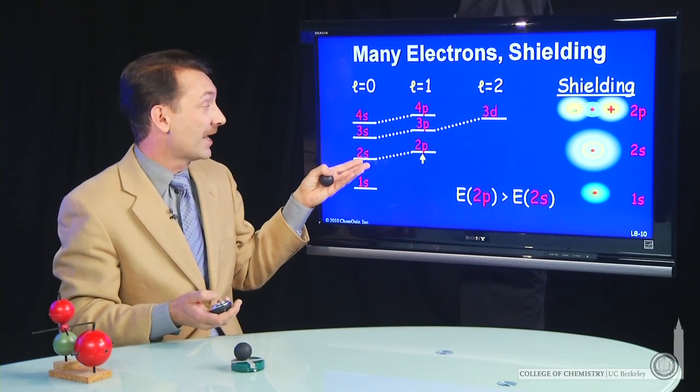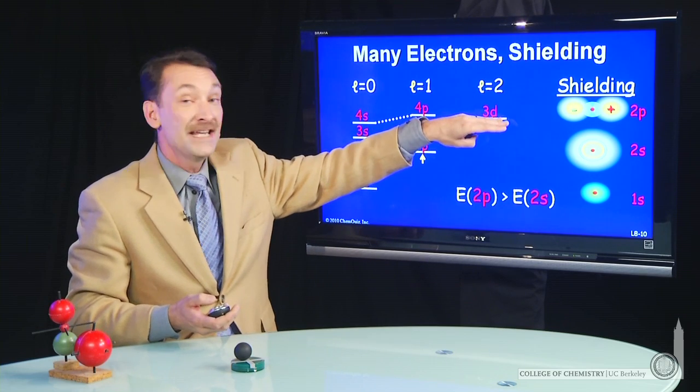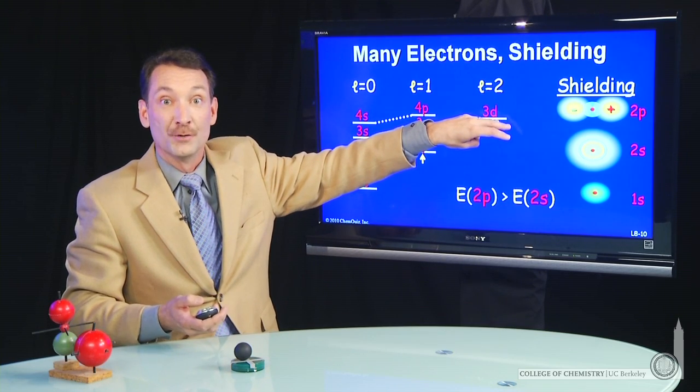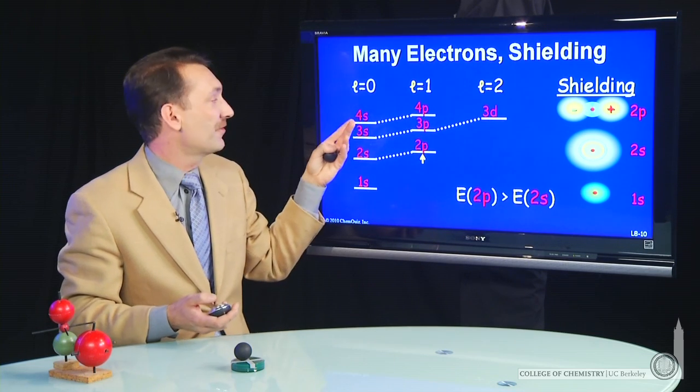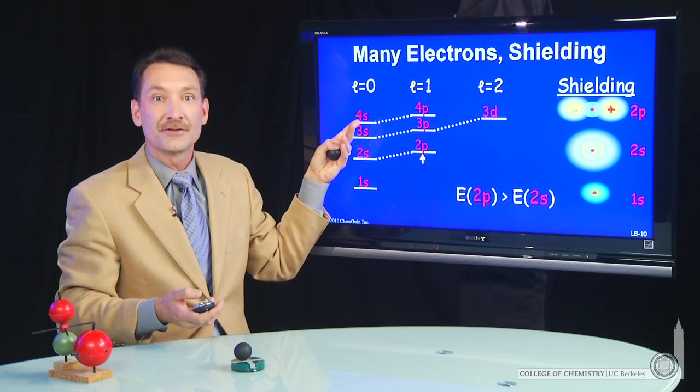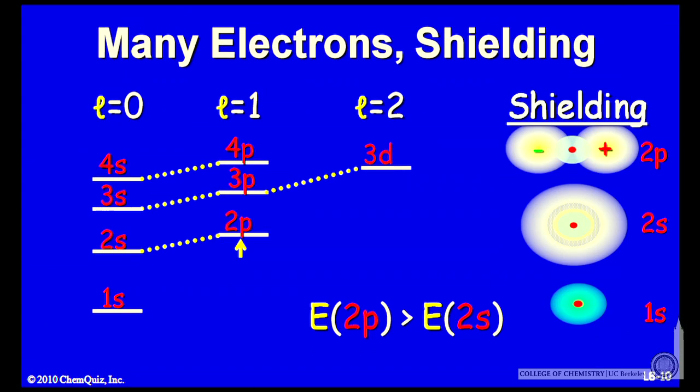And the effect is pretty dramatic. When you get a lot of s and p orbitals, this d, for instance, the first d that you encounter, 3d actually becomes higher energy, easier to ionize than the 4s in many electronic configurations. So it's a significant effect, this shielding effect.